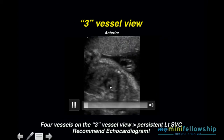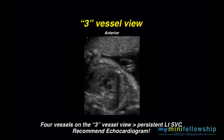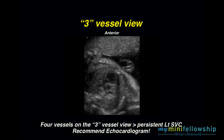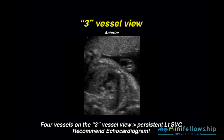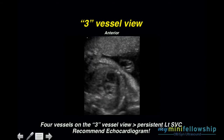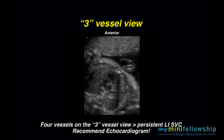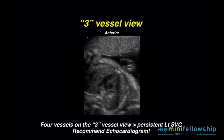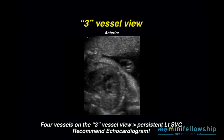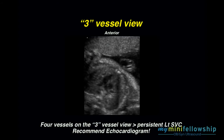Here I see four vessels on my three-vessel view. When you see four vessels on a three-vessel view, that means you're looking at a persistent left superior vena cava. That isn't always associated with a congenital heart lesion, but it's often enough that whenever you make that observation, you should recommend an echocardiogram.